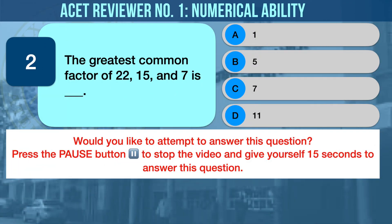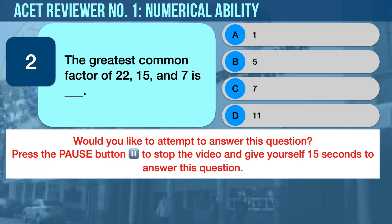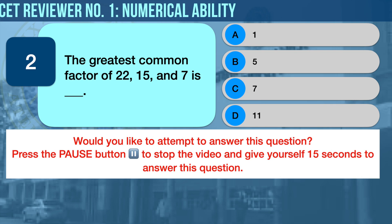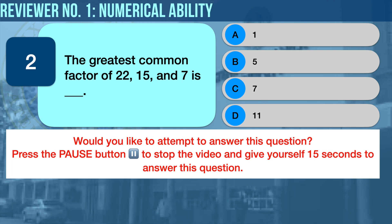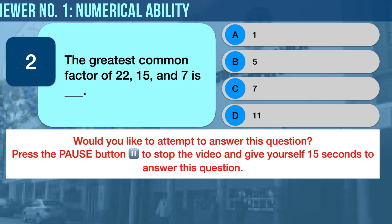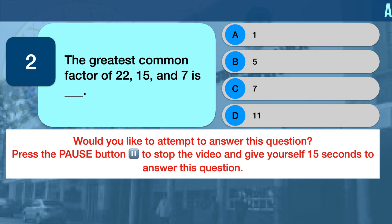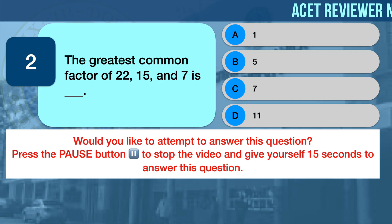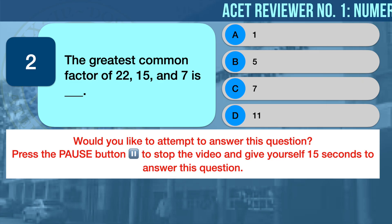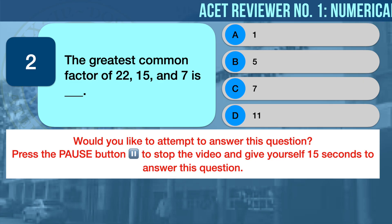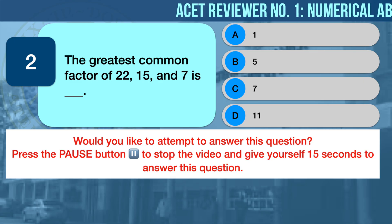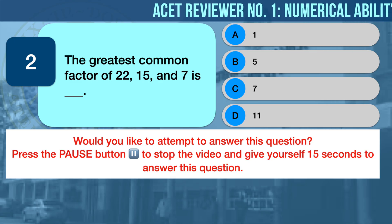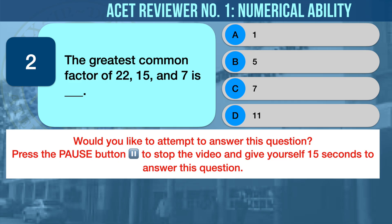Numerical Ability Problem Number Two: Greatest Common Factor. The greatest common factor of 22, 15, and 7 is — A) 1, B) 5, C) 7, D) 11.